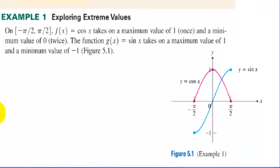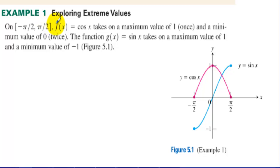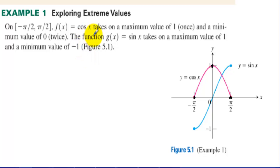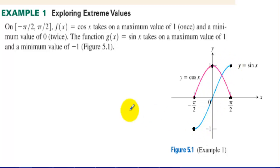Exploring Extreme Values. On the interval negative π/2 to π/2, f(x) = cos(x) takes on a maximum value of 1 once and a minimum value of 0 twice — a maximum on the interior and two minimums at the endpoints. The function g(x) = sin(x) takes on a maximum of 1 and a minimum of negative 1, with extreme values at the endpoints.